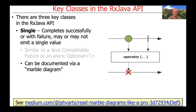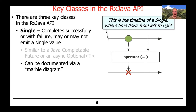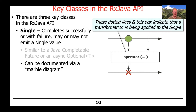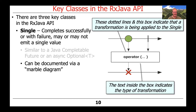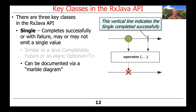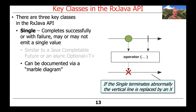You can document the behavior of a Single with a marble diagram, as shown in the link at the bottom of this slide. As with Project Reactor, the timeline of a Single is shown with time flowing from left to right. An optional item can be emitted by the Single if all goes well. The dotted line and the box indicate that a transformation is being applied, and the name inside the box indicates what the transformation is — it's going to be mapped to a method in the Single API. The result of the transformation is a new Single. The vertical line indicates the Single completed successfully, and an X indicates something has gone wrong.